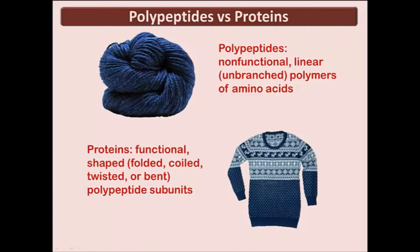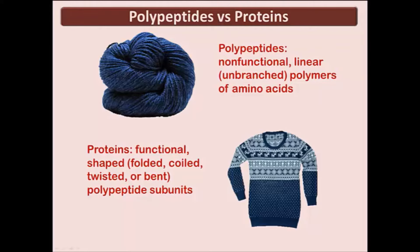A protein consists of one or more polypeptides and has been twisted, shaped, bent, folded, and coiled. Some proteins are globular or spherical in shape, while others are long fibers. Protein shape has wide variety and determines protein function. However, protein function is not only determined by shape, but also by its ability to bind and recognize other molecules.